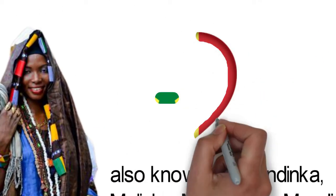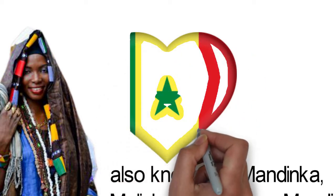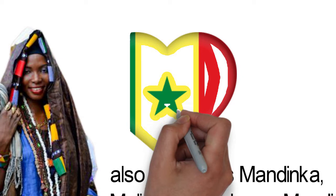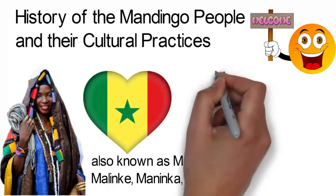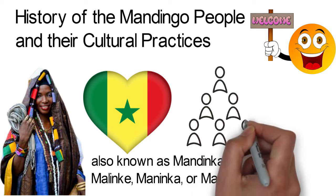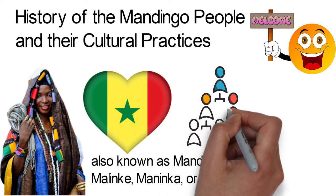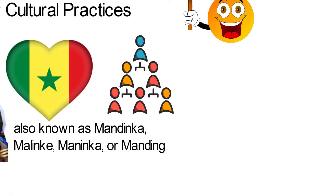They occupy various locations such as Sierra Leone, Liberia, Burkina Faso, Mali, Senegal, Mauritania, Gambia, Guinea, Guinea-Bissau, Chad, Niger, with a total population of over 11 million people.